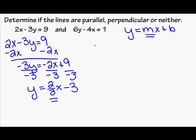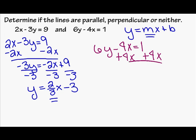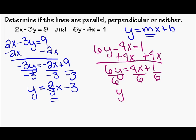Let's find the slope of the second line: 6y minus 4x equals 1. Once again, I need to get y by itself, so I'm going to add 4x to both sides of the equal sign. So I get 6y equals 4x plus 1. To get y by itself, I need to divide by 6 — remember, you divide each part by 6. So y equals 4 sixths x plus 1 sixth. Now 4 sixths reduces to 2 thirds. So I have y equals 2 thirds x plus 1 sixth. The slope of the second line is also 2 thirds.